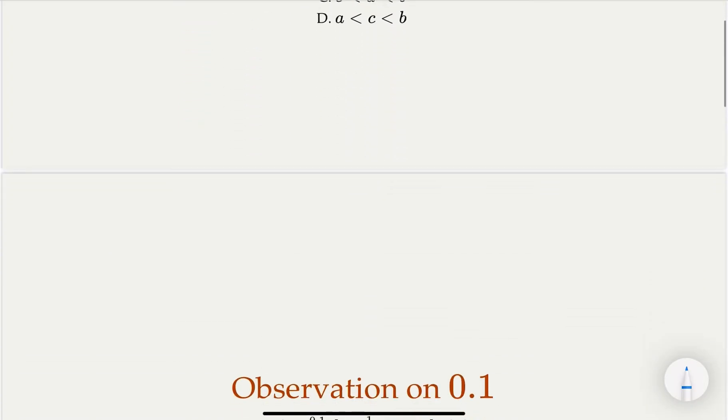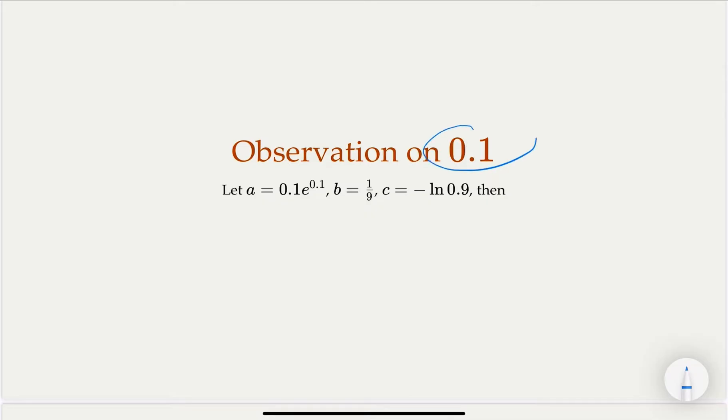Alright, so here, observation is that, let's think about 0.1 here. Even though it's 0.9, you know that this is 1 minus 0.1. So C, we can treat it as log(1 minus 0.1). And here, when we talk about this, the function we're interested in is probably x e to the x, where x equals 0.1.